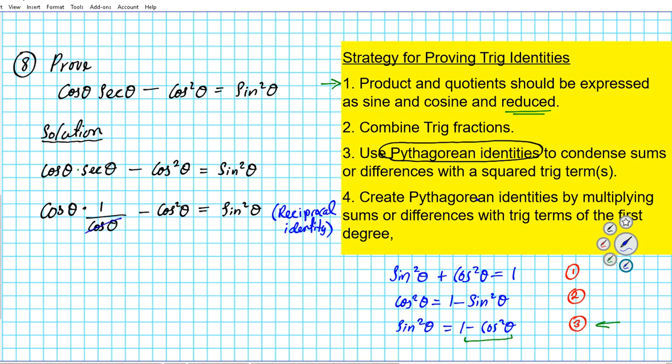So we're going to divide here. Cosine goes here one, cosine goes here one. And then when you multiply that all out, you have one minus cosine squared theta equals sine squared theta.